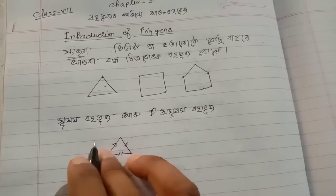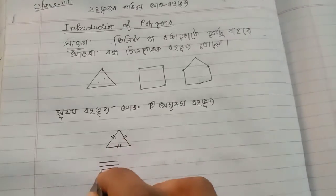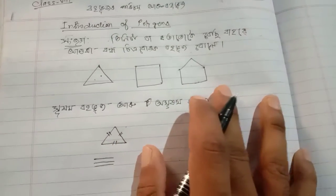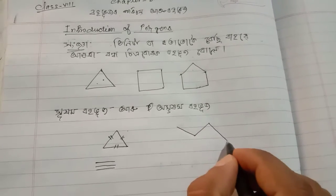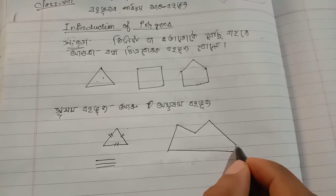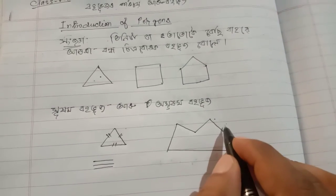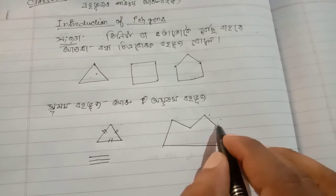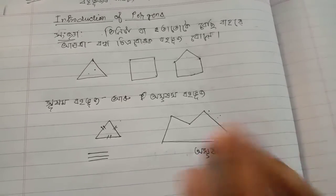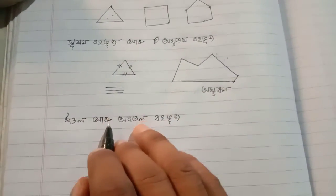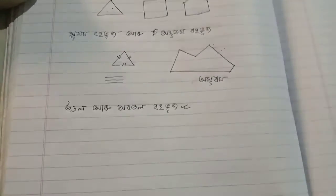If all sides of a polygon are equal, it is called a regular polygon. If the sides are not equal and each side's length is not the same, then it is an irregular polygon. We will now discuss two other types: convex (Uttal) and concave (Avatal) polygons.